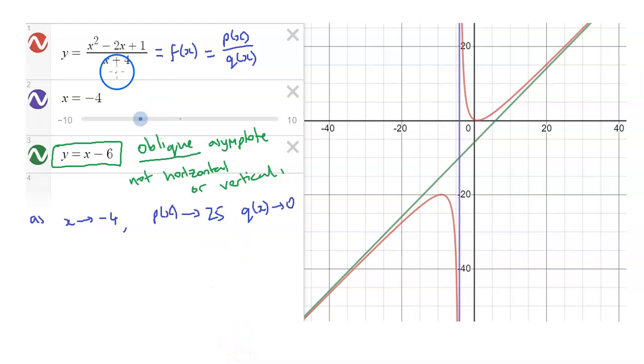Okay, and the answer is actually just polynomial division. If we go ahead and do this division, x squared minus 2x plus 1, if we divide it by x plus 4, then x squared plus 4x, do our subtraction.